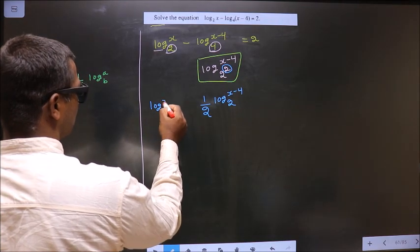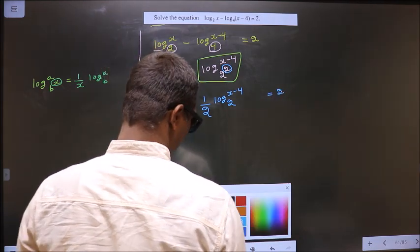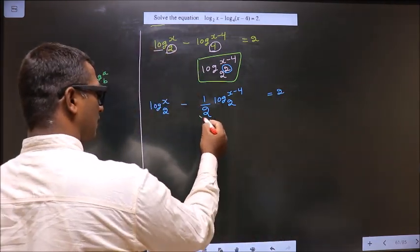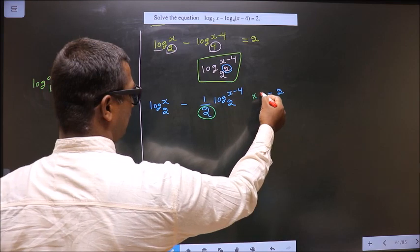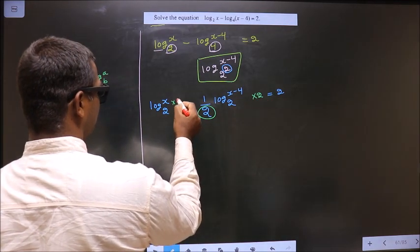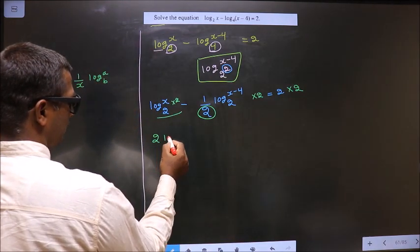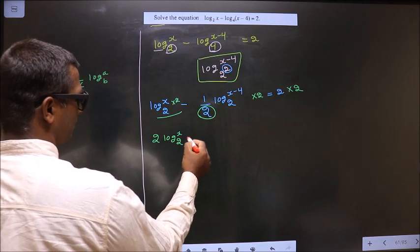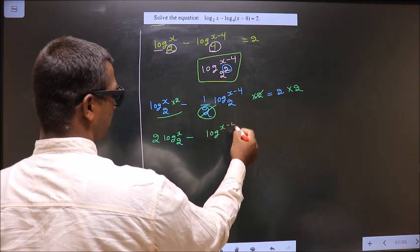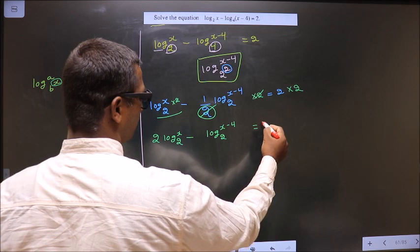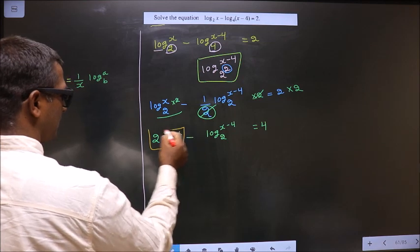The first term has no change. So we have log x base 2 minus one-half log(x minus 4) base 2 equal to 2. Now we should remove the denominator 2 by multiplying each term by 2, giving 2 log x base 2 minus log(x minus 4) base 2 equal to 4.